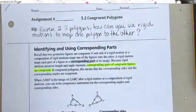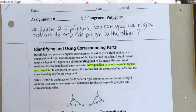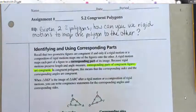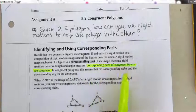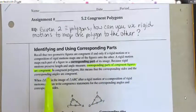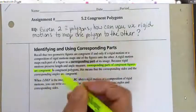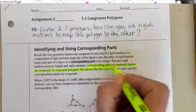For example, corresponding angles are going to be congruent in congruent polygons, and corresponding sides are going to be congruent in congruent polygons. So in congruent polygons, corresponding sides and corresponding angles are congruent — that's very important.